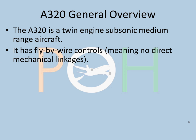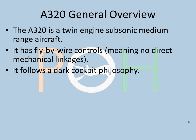A key feature is fly-by-wire control. Basically, there are no direct mechanical linkages from the cockpit to the flight control surfaces. Everything is through electronics, computers, wires, and actuators. It also follows a dark cockpit philosophy — a very important feature. What Airbus suggests is, if the cockpit is dark with no system lights illuminated, that system or the aircraft is operating normally.